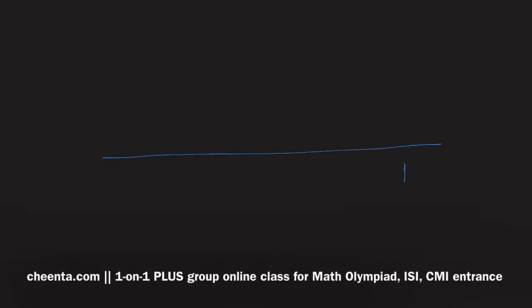Suppose this is a river, it's a straight line. This is your house, let's call this point A, and this is your friend's house, let's call this point F. You want to go from A to the river and then from the river to your friend's house.